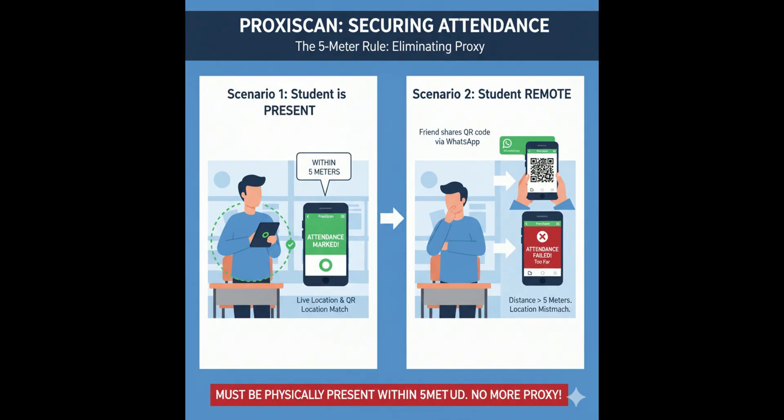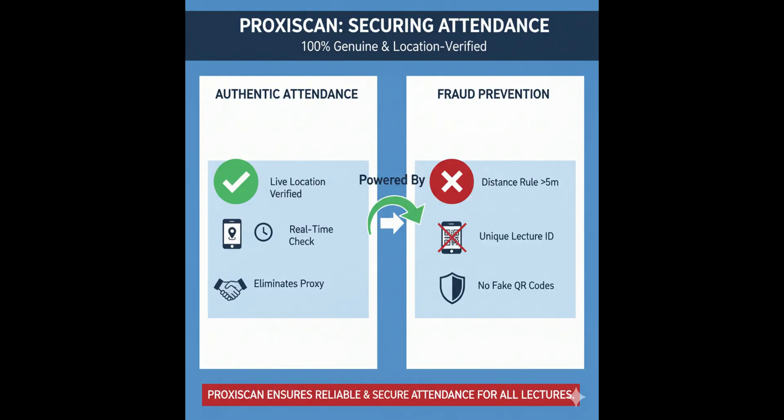This ensures that even if someone shares a QR code image through WhatsApp or any other medium, it would not work because the system verifies the location in real-time. Students must be physically present within 5 meters of the lecture room's location to successfully mark attendance. Additionally, each QR code includes a unique lecture ID, making it impossible for a student to generate a fake QR code or manipulate attendance.